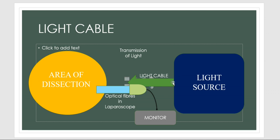From the CCD, the feedback goes to the camera analyzer and then finally to the monitor. So transmission of light in any minimal access surgery occurs through the light cable as well as the optical fibers present inside the laparoscope. The reflected rays come back and are again perceived by the CCD, and then finally the image formed is displayed on the monitor.